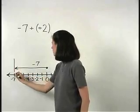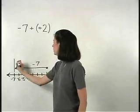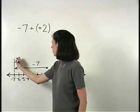Then from there, positive 2 moves us 2 units back to the right.